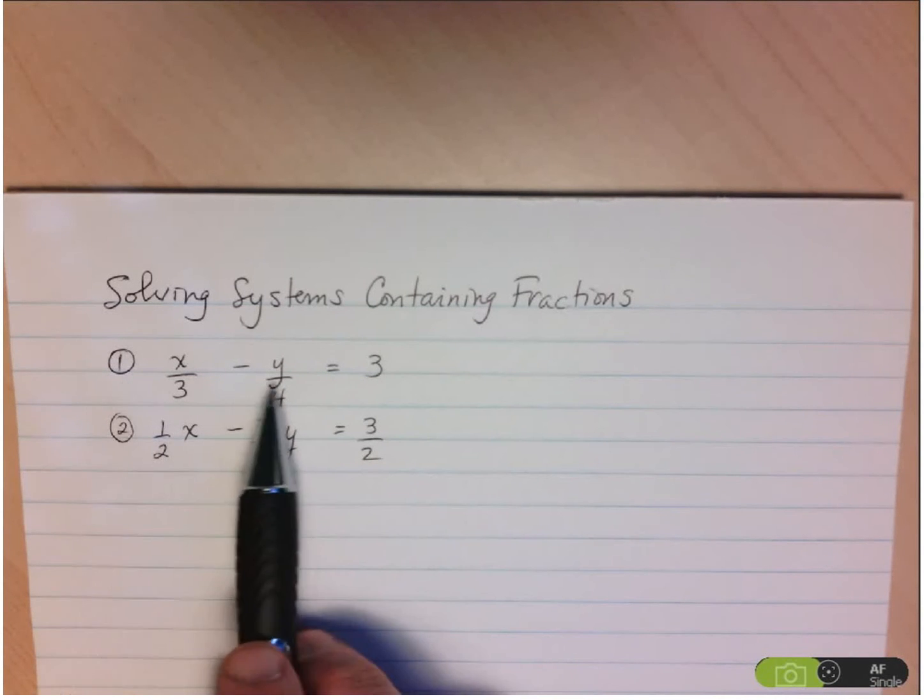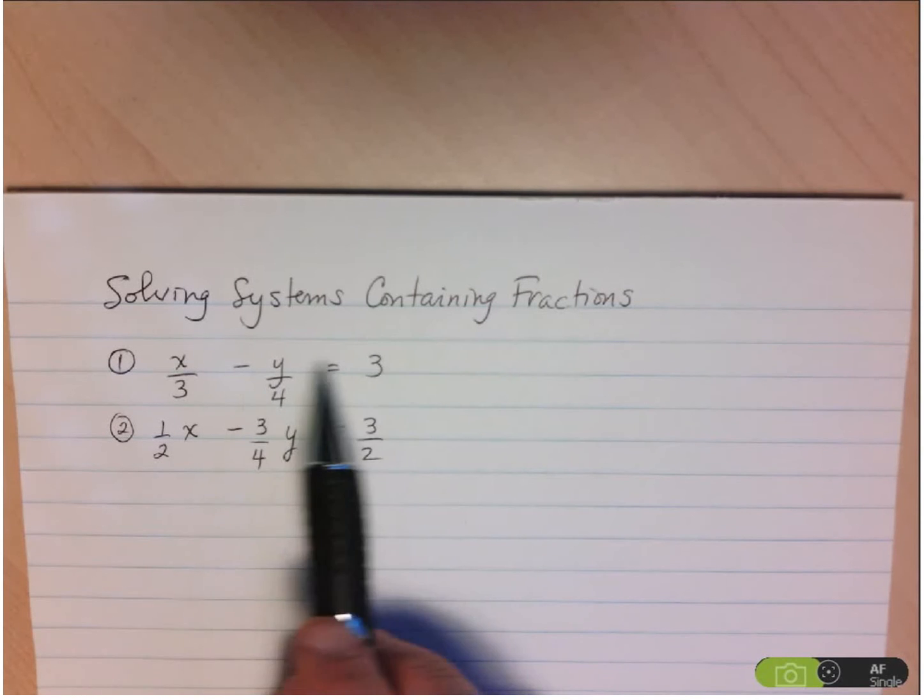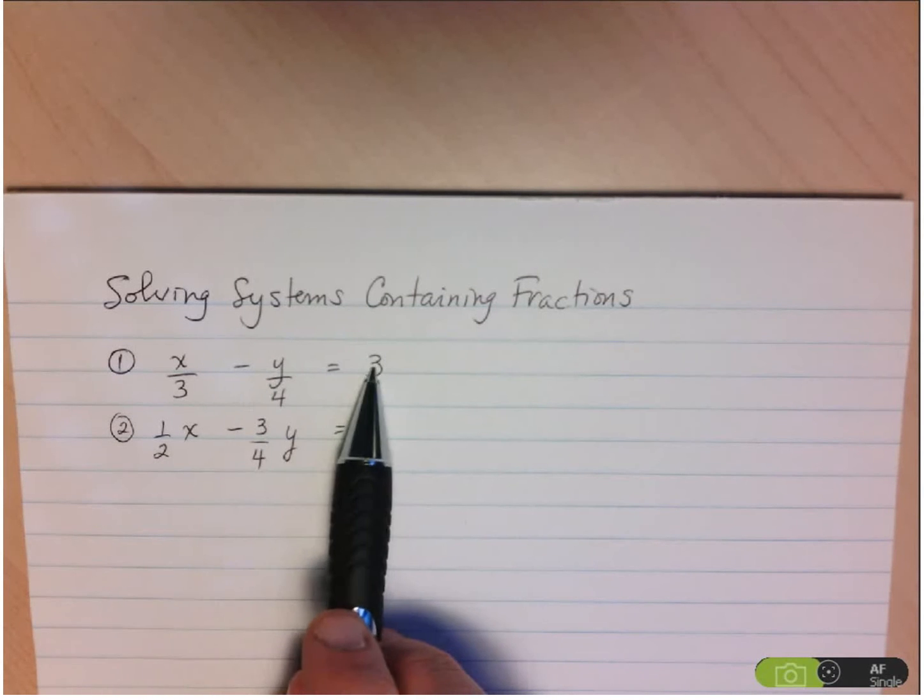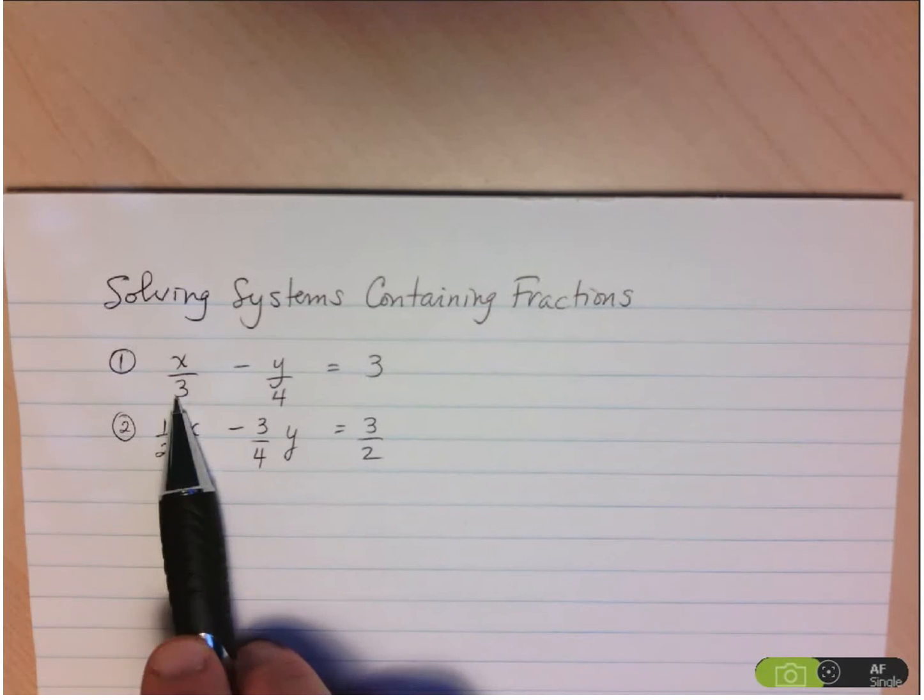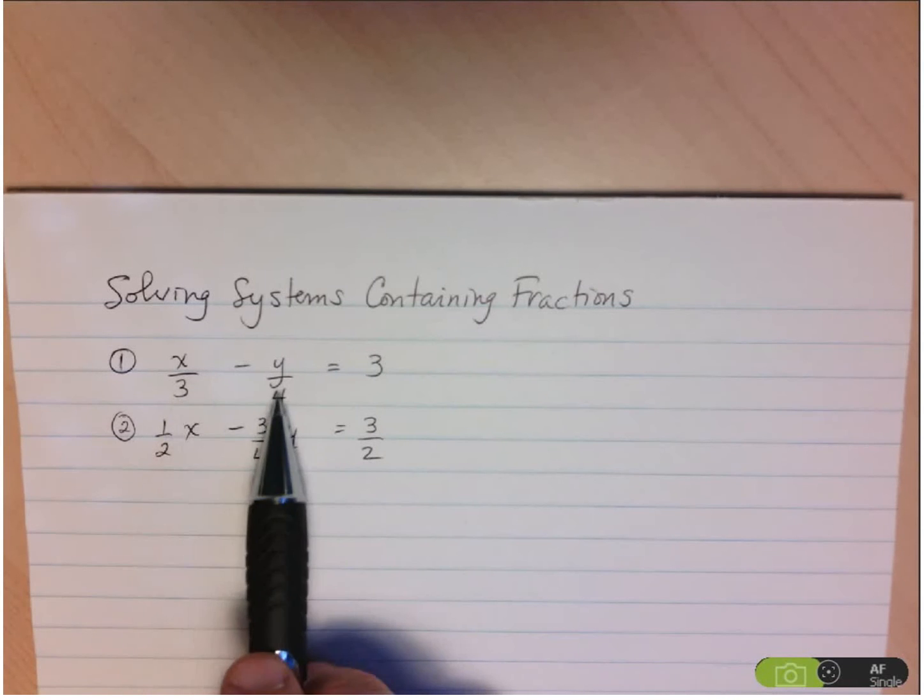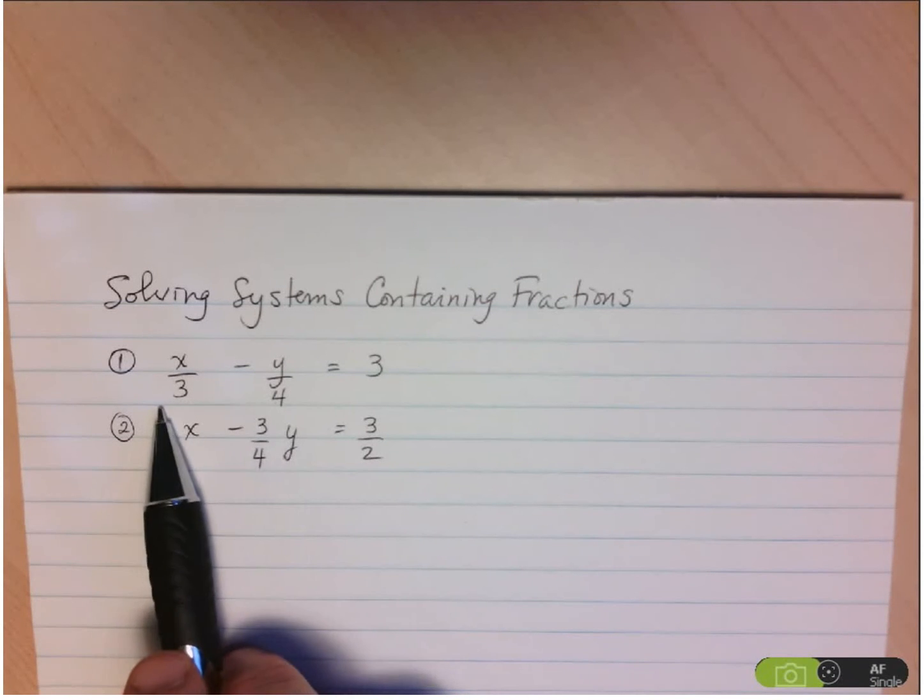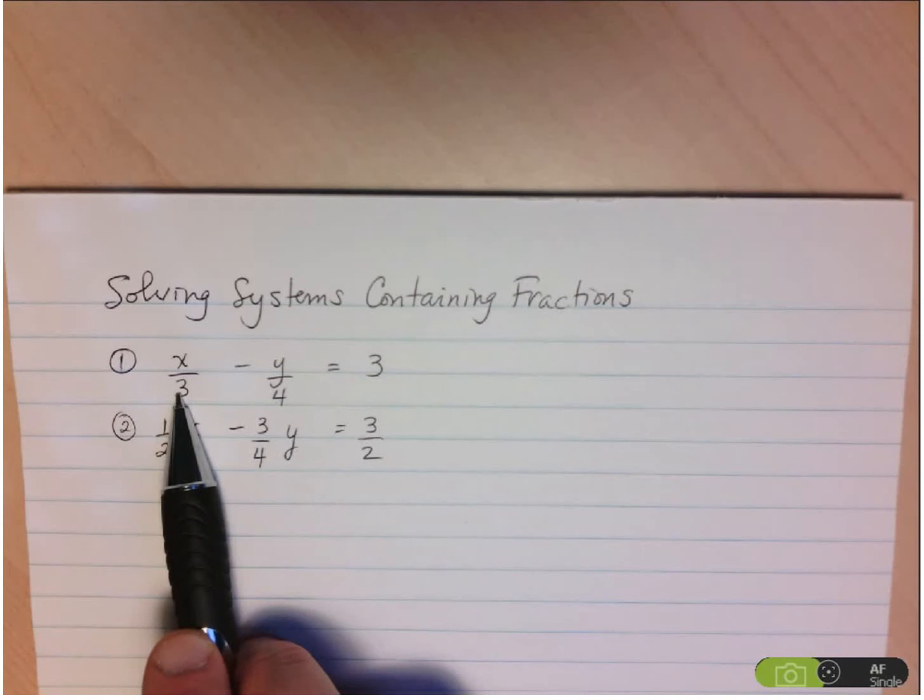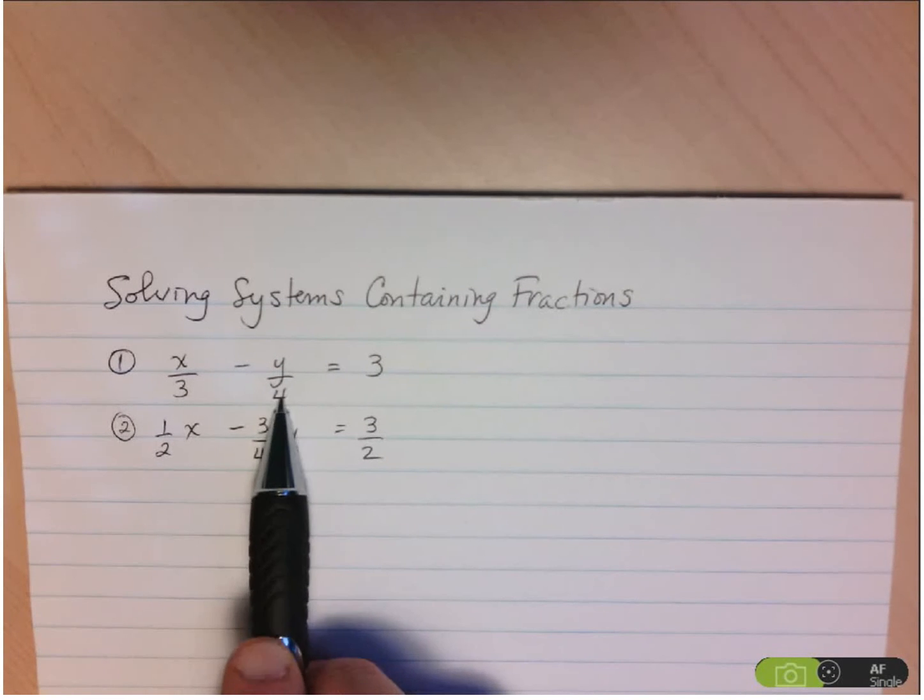So what number could we multiply to both sides of equation 1 that would eliminate both the denominator 3 and the denominator 4? And we realized, well, if we took the lowest common multiple, in other words 12, or the lowest common denominator, and multiplied that to both sides, it would eliminate the denominator 3 here and the denominator 4 there.